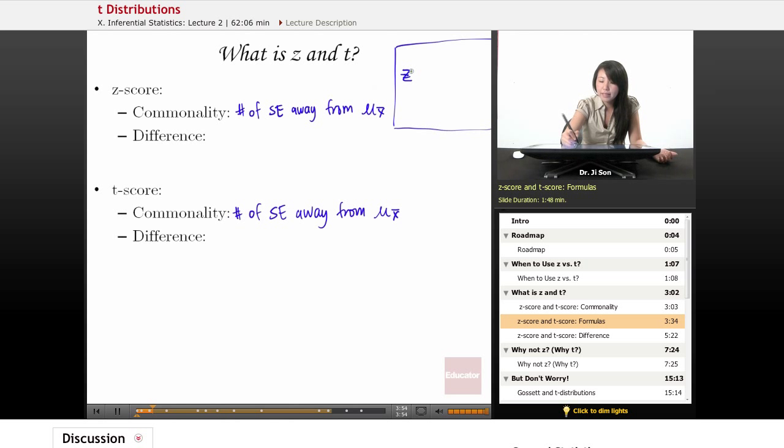So Z equals, we have X-bar minus mu, or mu sub X-bar, they're the same. And this gives us the distance in terms of just the raw values. So just how many, whatever, inches away, points away, whatever it is, whatever your raw score means, degrees away.